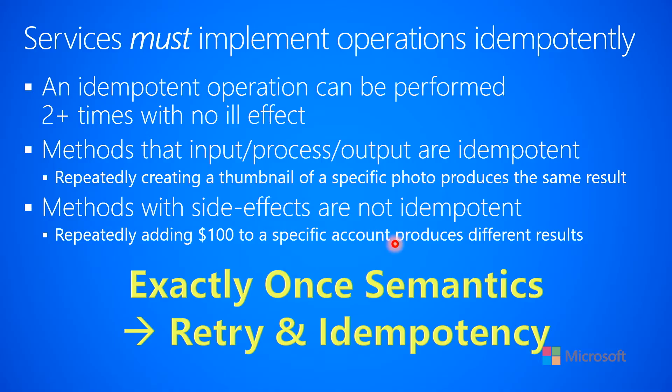What we want is exactly once semantics — the client sends a message to the server and it is received and processed exactly once. In a world of failure, the way we achieve exactly once semantics is that the client does retries and the server makes the operation idempotent. Client does retries, server makes the operation idempotent — that's how we get exactly once semantics in a world where failure is inevitable.